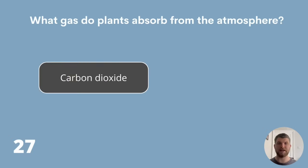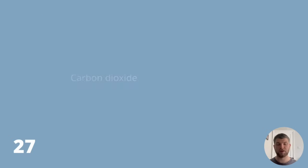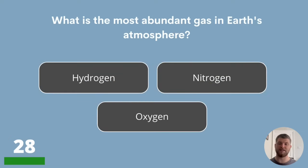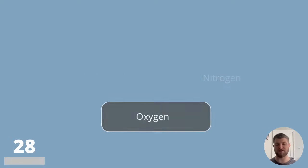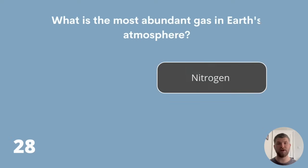Question 28. What is the most abundant gas in Earth's atmosphere? Is it hydrogen, nitrogen or oxygen? The most abundant gas in our atmosphere is nitrogen.